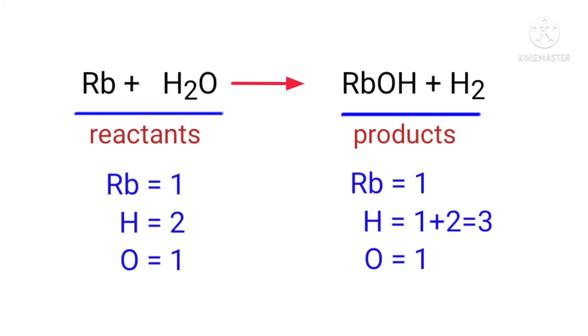On the reactants side, there are one rubidium atom, two hydrogen atoms, and one oxygen atom present. On the products side, there are one rubidium atom, three hydrogen atoms, and one oxygen atom present.